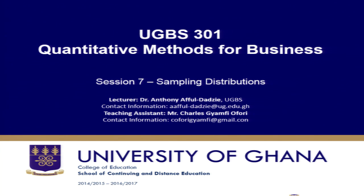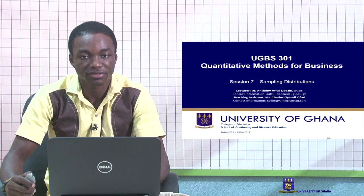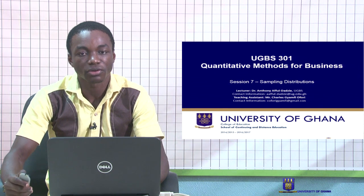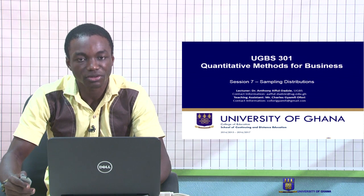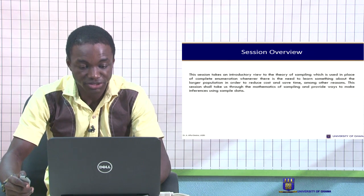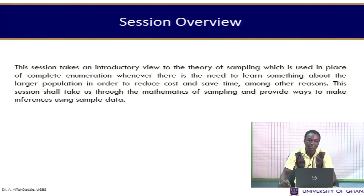Welcome to session 7 of UGBS 3.0.1. In the previous session, we looked at probability distributions for discrete random variables and also for the continuous random variable. In this session, we will take a look at sampling distributions. We will take an introductory view to the theory of sampling, which is used in place of complete enumeration whenever there is a need to learn something about a larger population. This is mostly done to reduce costs and save time, among other reasons.